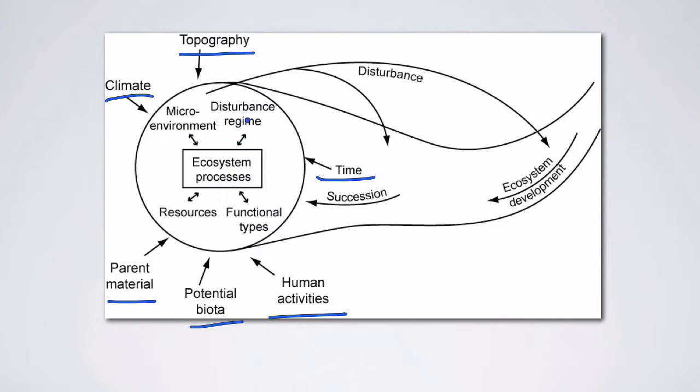In addition, microenvironment, disturbance regime, resources, and functional types are the interactive controls on the ecosystem processes that we care about. And in this case, we really want to think about evapotranspiration. Now if we start to think about this, essentially what we want to know, if you have a particular climate, how much of an impact is that going to have on something like evapotranspiration?